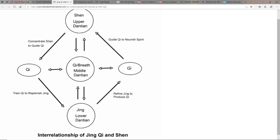And then here we see an interrelationship between jing, chi, and shen. Again, jing residing in the lower dantian - refine jing to produce chi, guide chi to nourish spirit. You see over here it's all about the breath, it really is all about the breath. Concentration guides the chi and you can train the chi to replenish the jing.